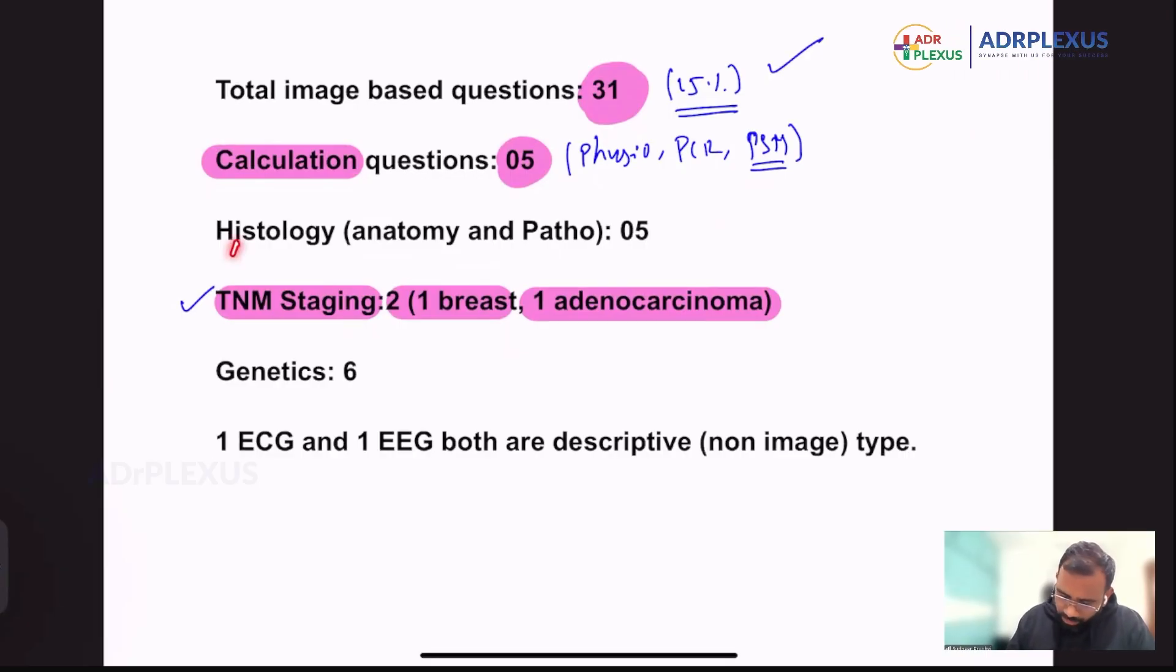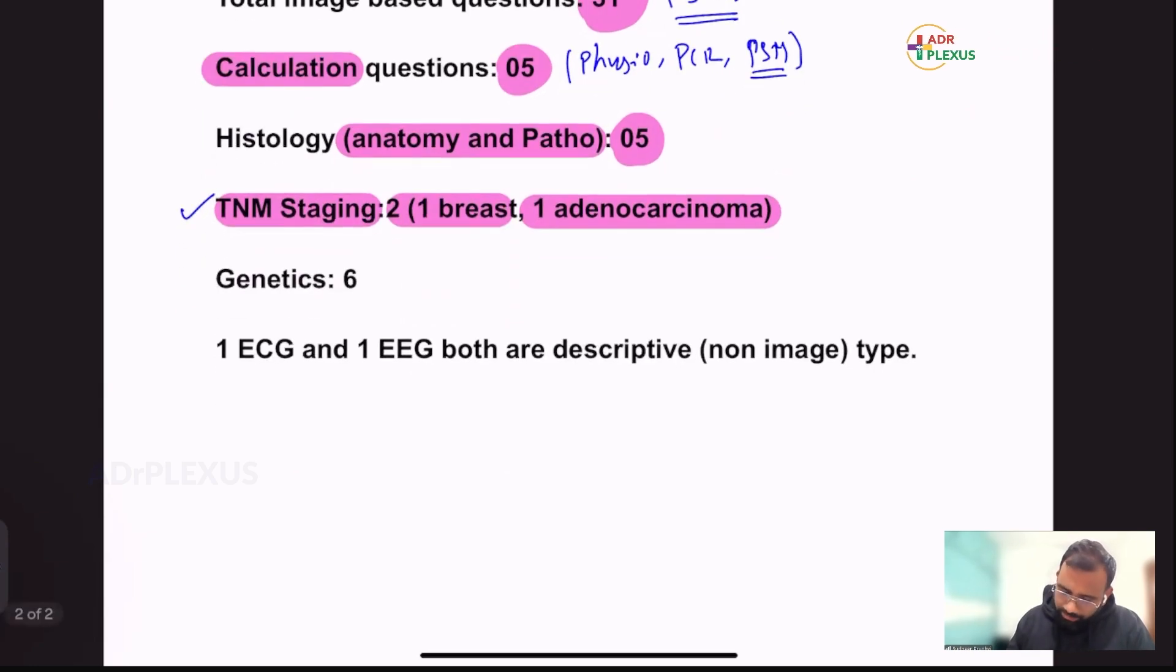And then histology, that including both anatomy and pathology, total around five questions, five images were there from histological part. As I mentioned, already told TNM staging, there were like two questions, like one breast and one adenocarcinoma. Again, I could see in genetics, in genetics around like six to seven questions were there, like predominantly asking about genetics part. Then that includes pathology genetics, like again, biochemistry genetics, almost like six to seven questions were there.